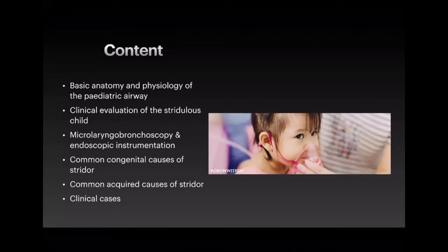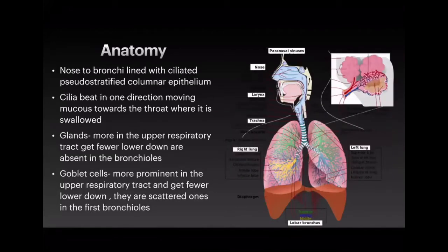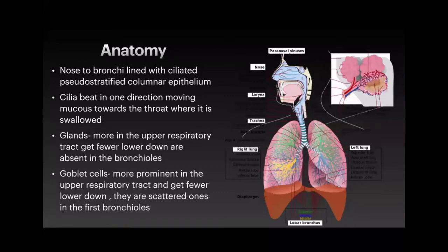In terms of the anatomy, we're particularly looking at the airway side of things: the supraglottis, glottis, subglottis, and down into the trachea and bronchi where it splits into right and left bronchus. The respiratory epithelium is lined with ciliated pseudostratified columnar epithelium, and the cilia beat upwards so that mucus can be tracked up into the mouth. Specific glands are more common in the upper respiratory tract and become absent in the bronchioles.